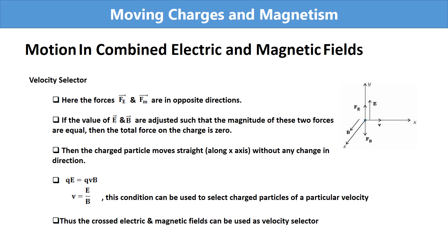This condition can be used to select charged particles of a particular velocity. If we want a particular velocity, we adjust the values of electric field and magnetic field such that E / B equals the desired velocity V. Thus, crossed electric and magnetic fields can be used as a velocity selector.